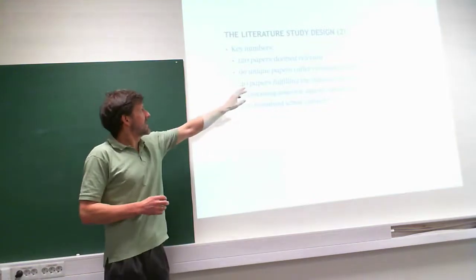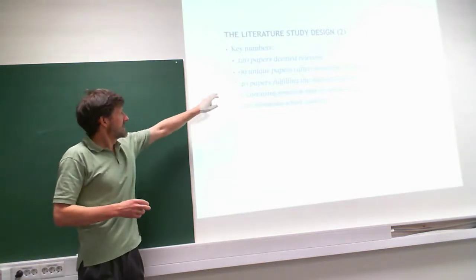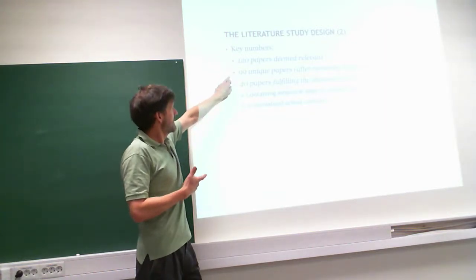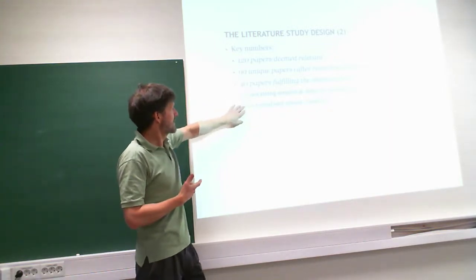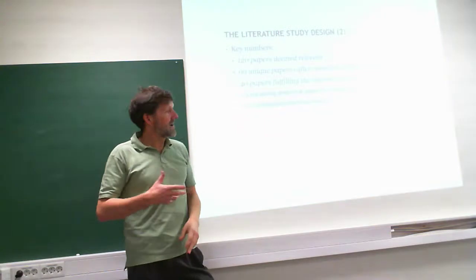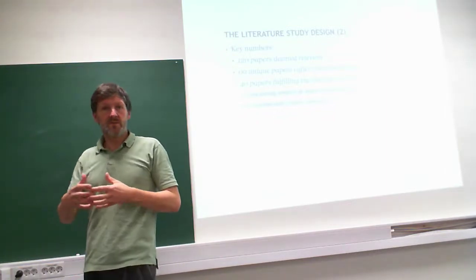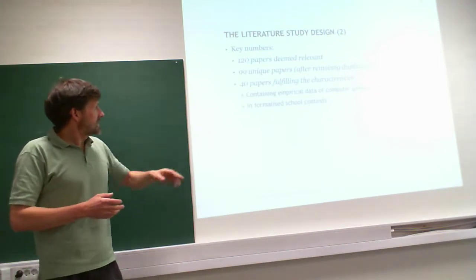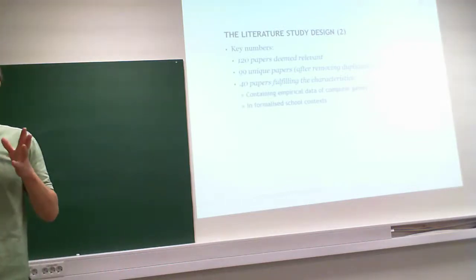So, they started with this huge pile of results from the search engines. And they identified 120 papers that were relevant. And there were some duplicates. There were 99 unique papers. And that's only 40 of those fulfilled the characteristics that they had empirical data about effectiveness. And it was in the formalized school context. They wanted to see used in school. Not the game that anyone could use individually. So, this is how they ended up with the 40 papers. These 40 papers are the ones that they analyzed. They studied. And they tried to draw conclusions after that set.